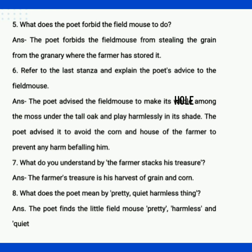Sixth question: refer to the last stanza and explain the poet's advice to the field mouse. Ki bhai last stanza mein poet ki jo advice hai jo field mouse ko poet ne di hai — the poet advised the field mouse to make its hole among the moss under the tall oak tree, uske niche jo moss hai wahaan pe apna hole banana. And play harmlessly in its shade.